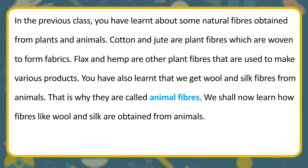In the previous class, you have learnt about some natural fibers obtained from plants and animals. Cotton and jute are plant fibers which are woven to form fabrics. Flax and hemp are other plant fibers that are used to make various products. You have also learnt that we get wool and silk fibers from animals — that is why they are called animal fibers. We shall now learn how fibers like wool and silk are obtained from animals.